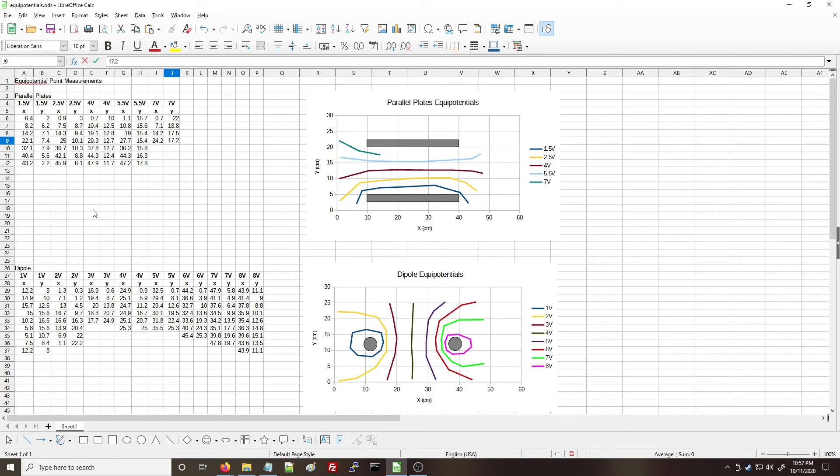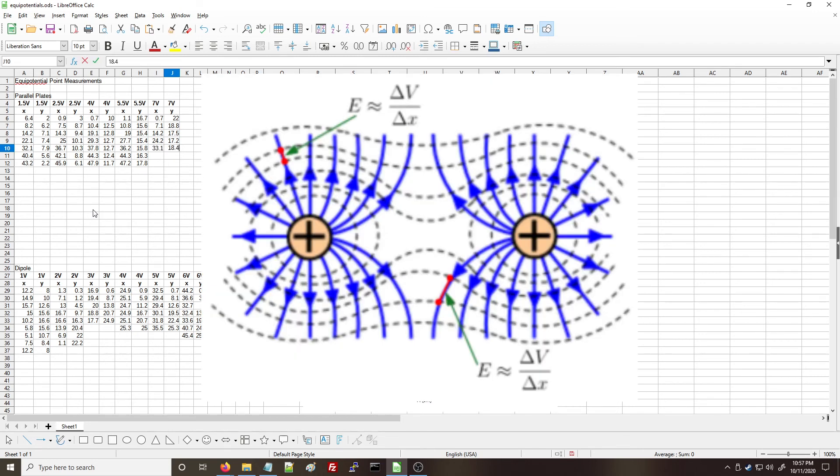Once you know the shape of the equipotential lines in your paper, you can use this to sketch the electric field lines, remembering that they must always run perpendicular to the equipotential surfaces.